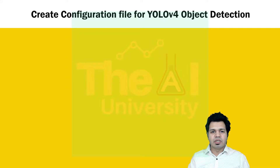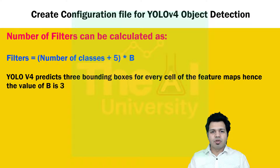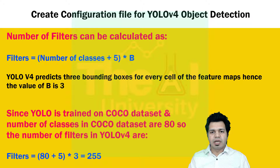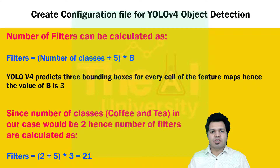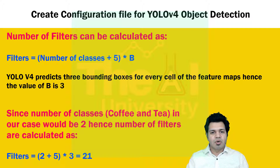We can calculate the number of filters using this equation. For YOLO trained on the COCO dataset with 80 classes, the calculation was (80 + 5) × 3 = 255. For our dataset, we will change the number of classes — in our case it would be (2 + 5) × 3, because we have two classes: coffee and tea. So the number of filters in our case would be 21.